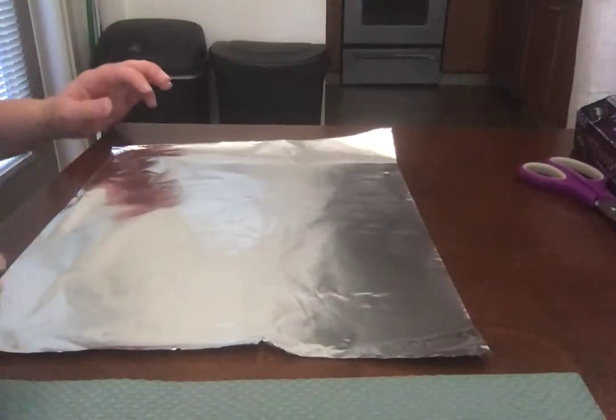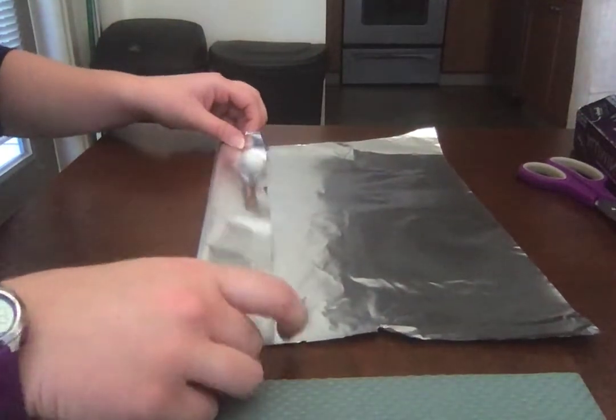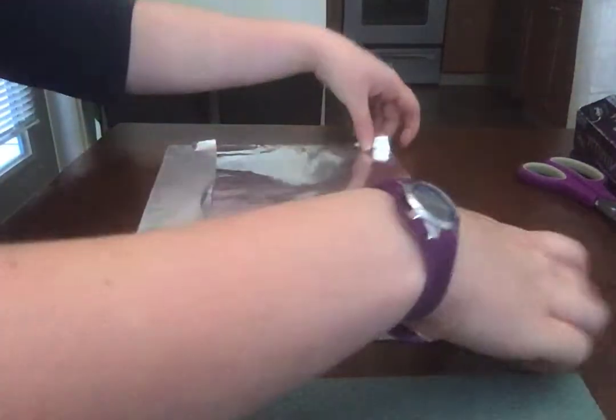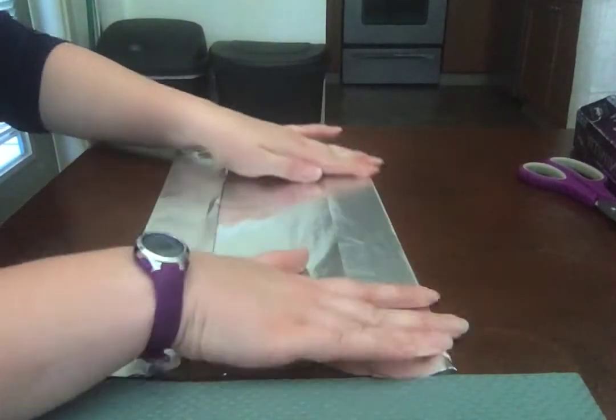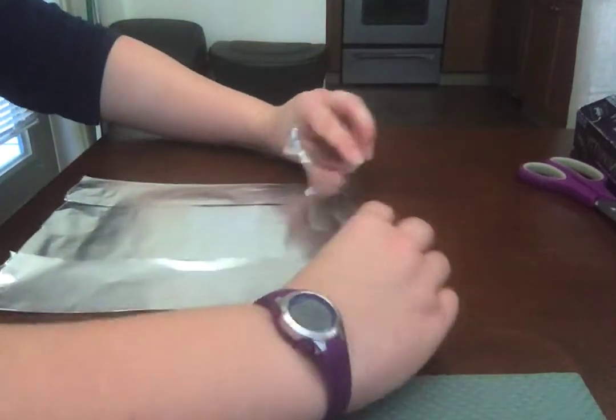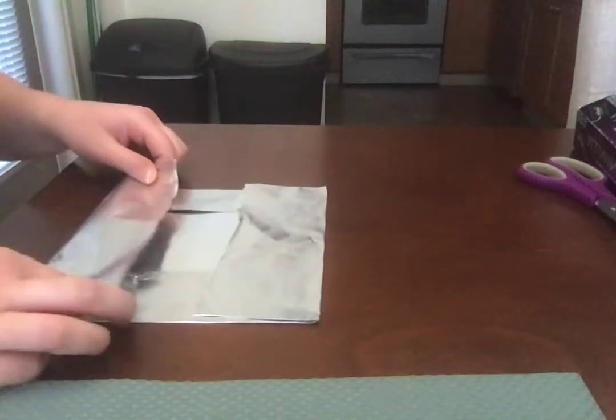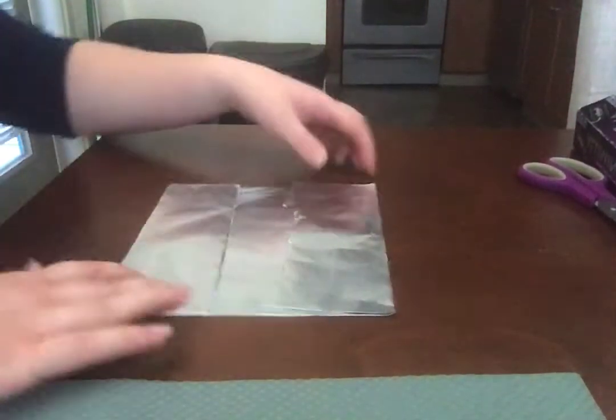Okay, and first thing we're going to do is fold the tin foil in like so. Do it to both sides. It doesn't have to be perfect, just has to be pretty close to square.